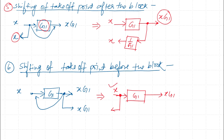We want the takeoff point value to equal xG1. So we multiply this signal by gain G1 to get the actual value x times G1. The rule is: if you want to shift the takeoff point before the block, the signal is multiplied by the gain. These two rules for shifting takeoff points are just the opposite of the rules for shifting summing points.